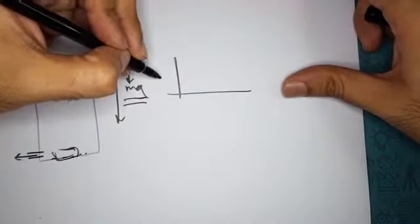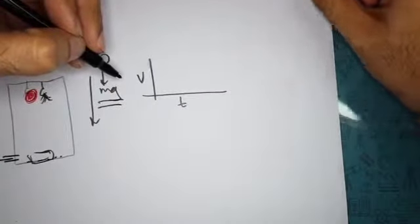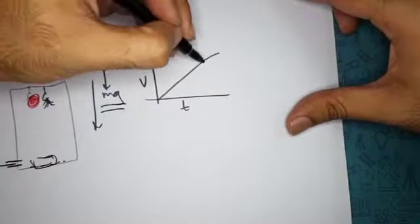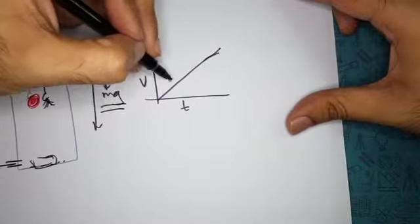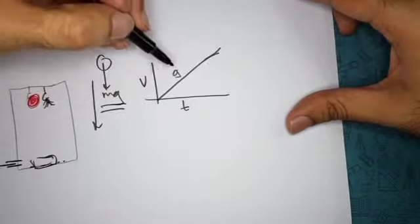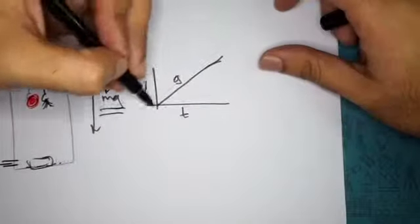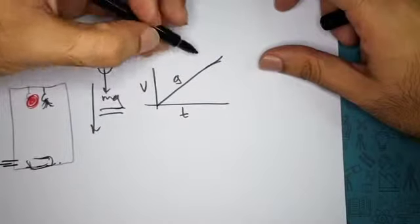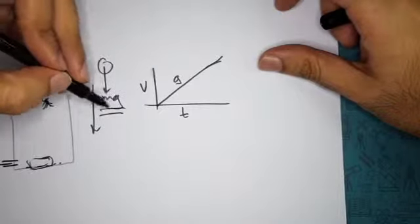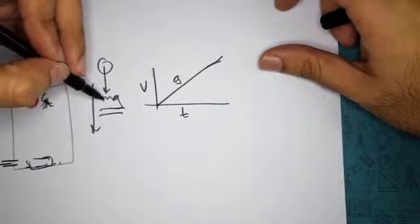The only force acting is weight mg, and this causes the object to constantly accelerate downwards because that's the only resultant force. If this is the velocity and this is the time, then you get this graph which is basically a straight line. The gradient of this line is going to be g, because the acceleration of the object is g. The force is always going to be constant at mg.